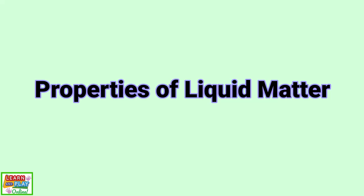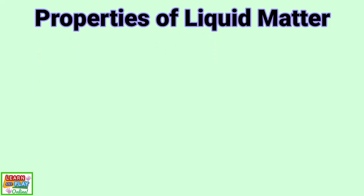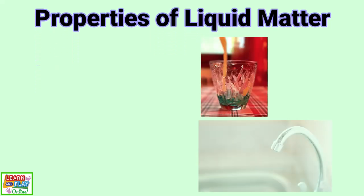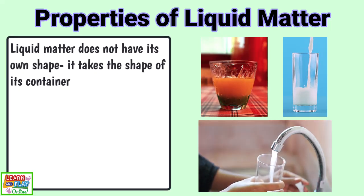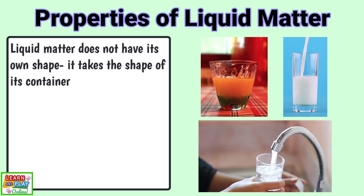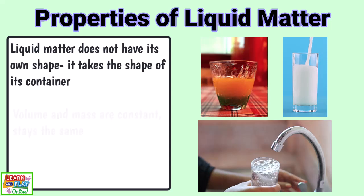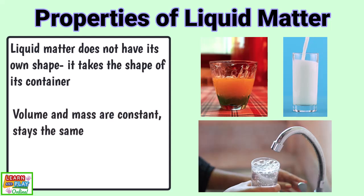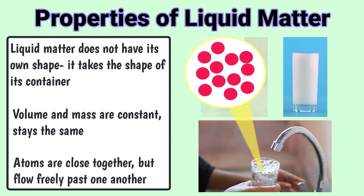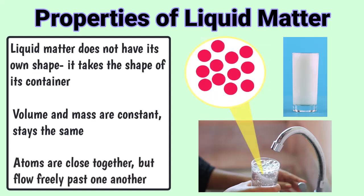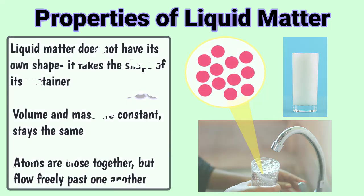Now let's move on to properties of liquid matter. Some examples of liquids are juice, water and milk. Liquid matter does not have its own shape; rather, it takes the shape of its container. The volume and mass of liquids are also constant and stay the same. Atoms in liquid matter are still close together, but flow freely past one another, unlike the atoms in solid matter.